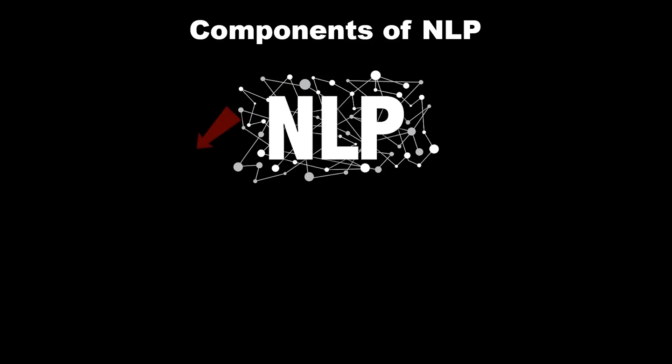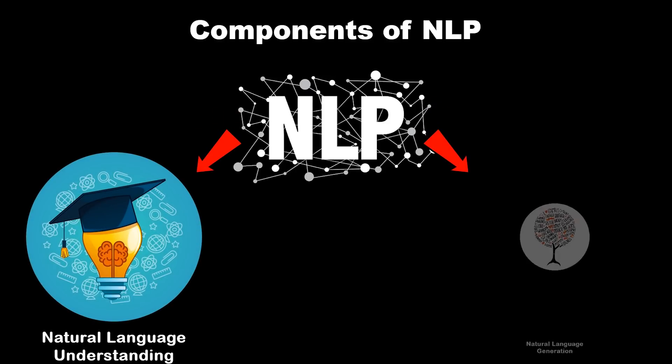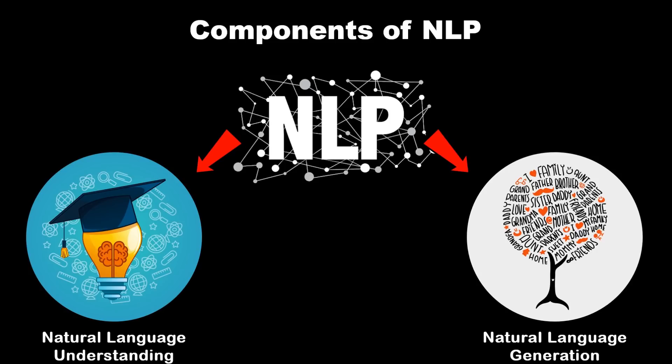NLP is divided into two major components: natural language understanding and natural language generation. Understanding generally refers to mapping the given input in natural language into a useful representation and analyzing those aspects of the language, whereas generation is the process of producing meaningful phrases and sentences in natural language from some internal representation.